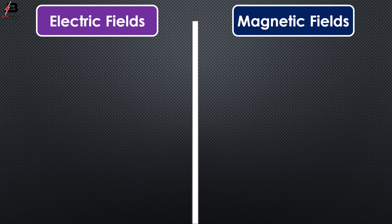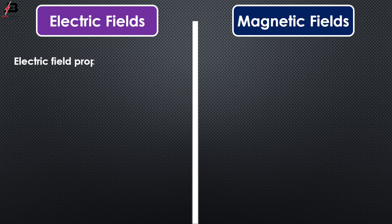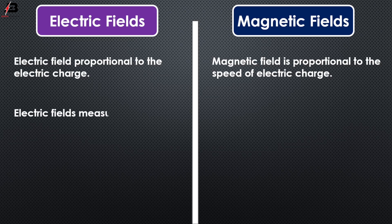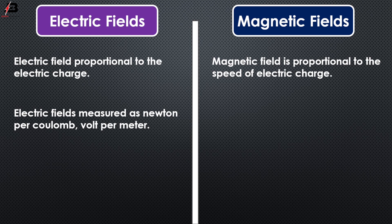Electric field versus magnetic field. Electric field is proportional to the electric charges. Magnetic field is proportional to the speed of electric charges. Electric field is measured as newton per coulomb or volt per meter.